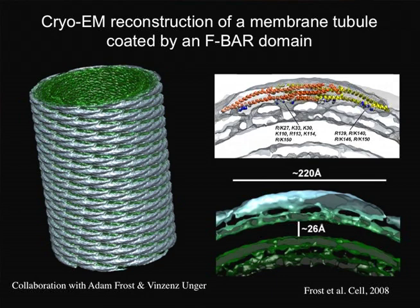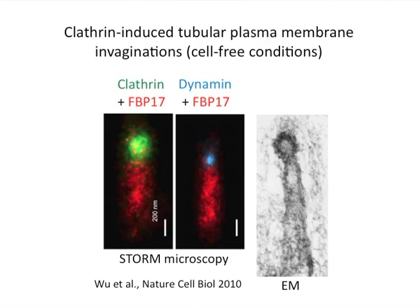In a physiological context, the propensity of BAR superfamily proteins to bind curved membrane bilayers is exploited both to generate and to sense curvature. More importantly, F-BAR proteins were shown to be present and to play important roles at endocytic sites, including endocytic clathrin-coated pits.